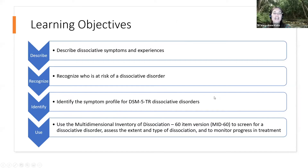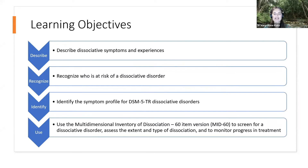What are we going to do today? We are going to learn a bit about dissociative experiences and symptoms, work out who's at risk of having a dissociative disorder. We're going to look at the DSM-5 TR dissociative disorders, but I want it to be very case-focused when we're looking at MID-60 cases. We'll do five case studies of real people with quite high levels of dissociation and different presentations, and look at issues about dissociation generally and what we need to think about when assessing dissociation in clients.